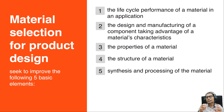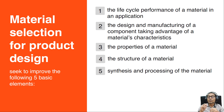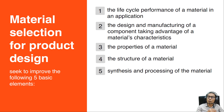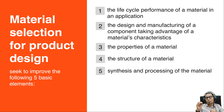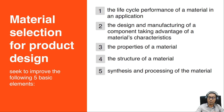Material selection for product design seeks to improve five basic elements: first, the life cycle performance of a material in an application; second, the design and manufacturing of a component, taking advantage of a material's characteristics — it is important to choose the right material with the right characteristics; third, to improve the properties and structure of a material; and fourth and fifth, the synthesis and processing of the material.